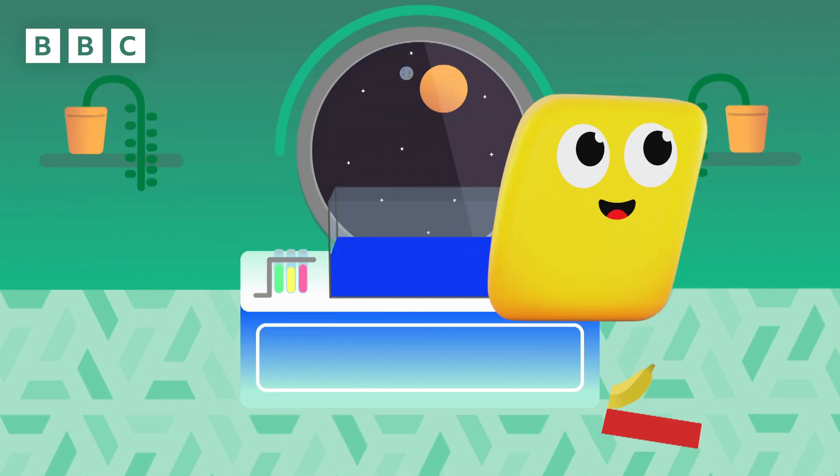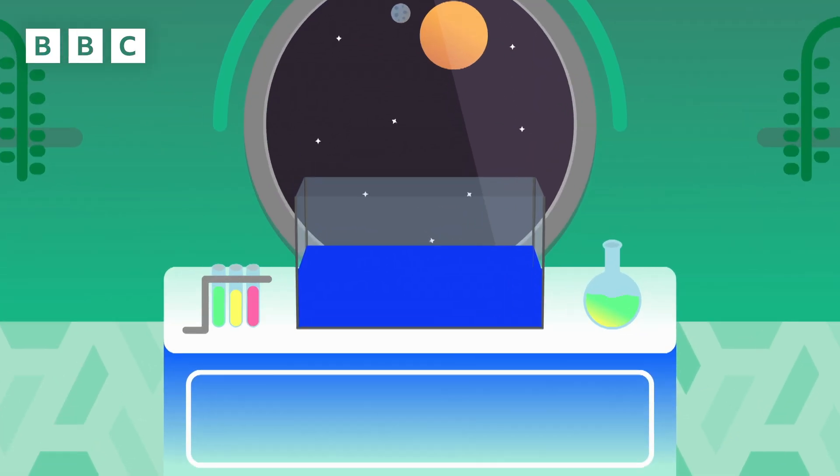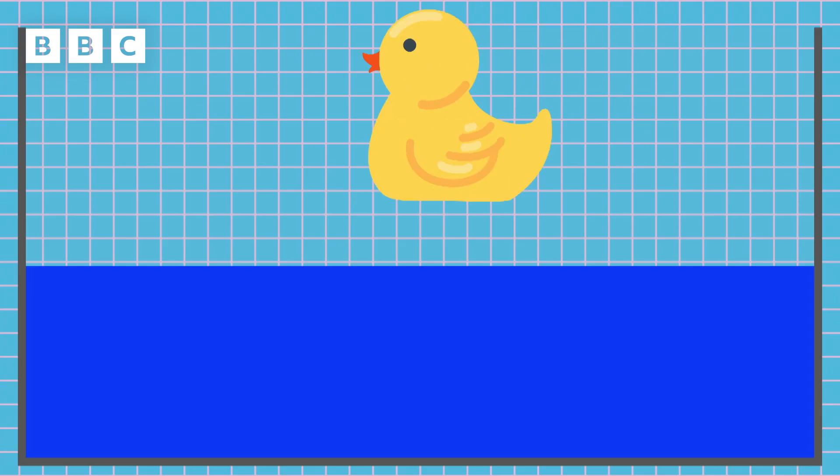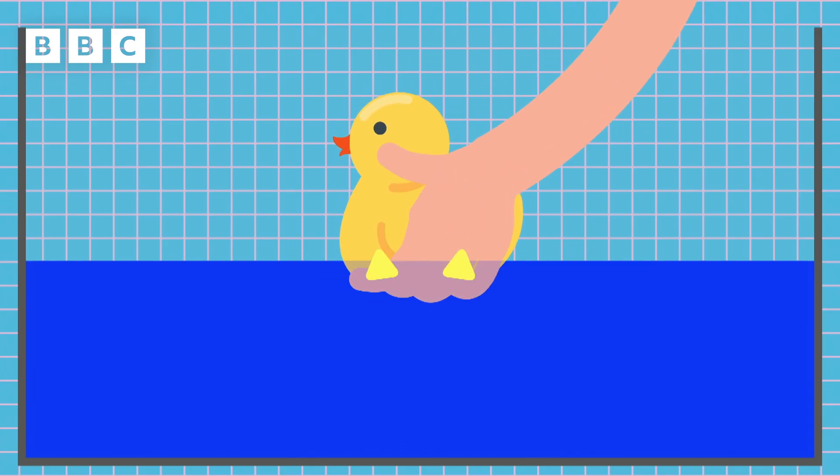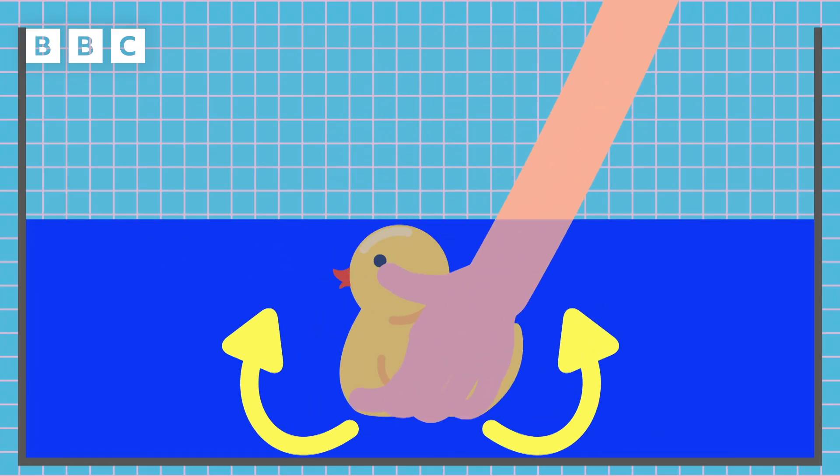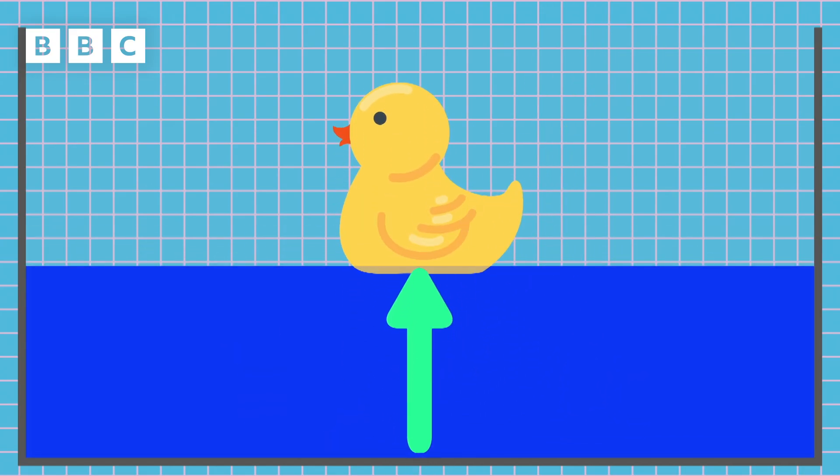Buoyancy is an object's ability to float in water or air. When you put an object in water, it pushes some of that water out of the way. This is called displacement. But the displaced water always tries to push back to where it was. This force is called upthrust.